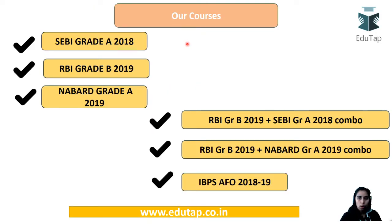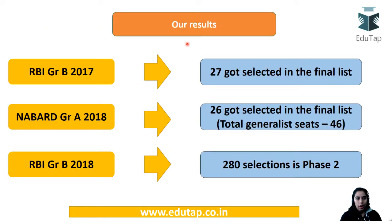We are offering SEBI, RBI, NABARD and combo courses. You can choose as per your requirement. In RBI Grade B 2017, 27 of our students made it to the final list. In NABARD Grade A 2018, 26 out of 46 seats were taken by EduTapians. For RBI Grade B 2018, 280 selections have been made in phase 2 and many students are going through the interview phase. Now starting with today's lecture.